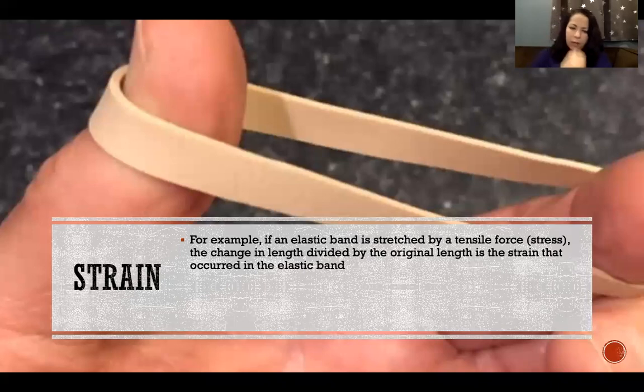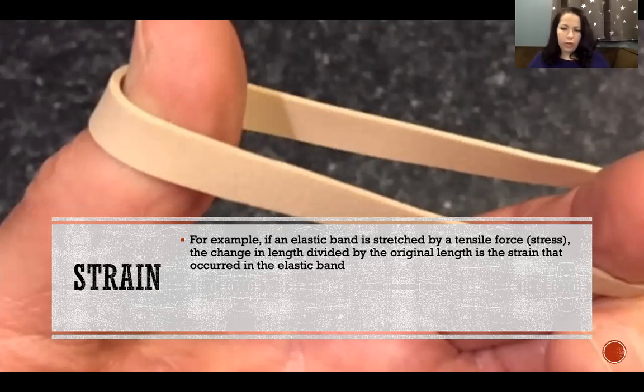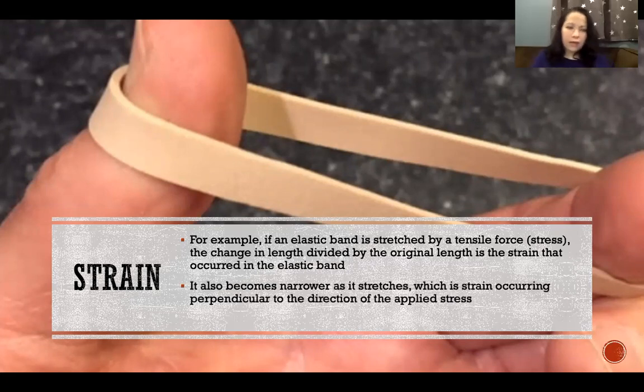An example of strain is if you take an elastic band like a rubber band or a resistance band and you stretch it. That's a tensile stress that the band is experiencing due to the tensile force that you applied to it. The change in the length of that rubber band divided by the original length is its strain, so it's presented as a percentage of change.